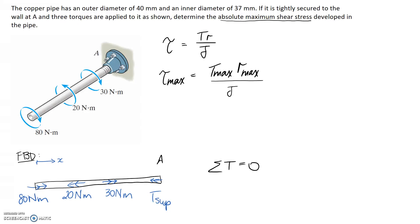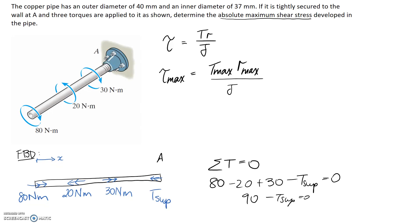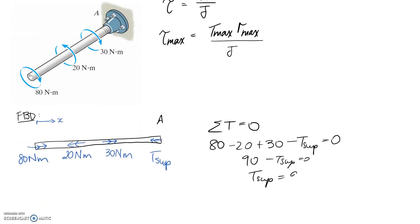The sum of torques has to equal zero as long as this shaft is not moving. That means we have 80 in the positive direction, 20 in the negative, 30 in the positive, and T-support in the negative direction. Solving this: 80 minus 20 plus 30 minus T-support equals zero. This is 60 plus 30, so 90 overall. Therefore, the support torque is 90 newton meters. It came out positive, which means I correctly assumed the direction.